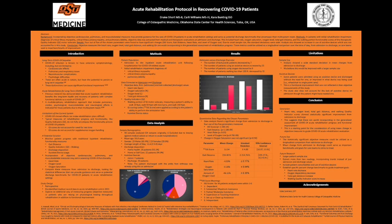Quantitative measures showed a significant change from admission to discharge in four out of the five parameters we measured. These four include GG score, which is the QI indicator walking subscale score, gait distance, heart rate, and level of oxygen. Of note, this statistical significance was an improvement in these four measures.